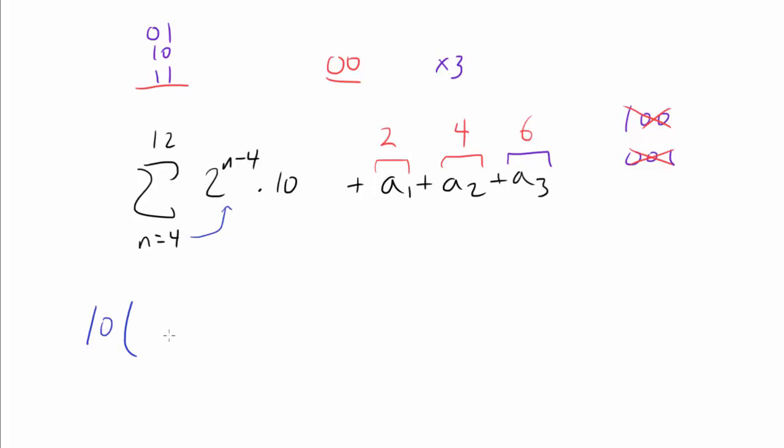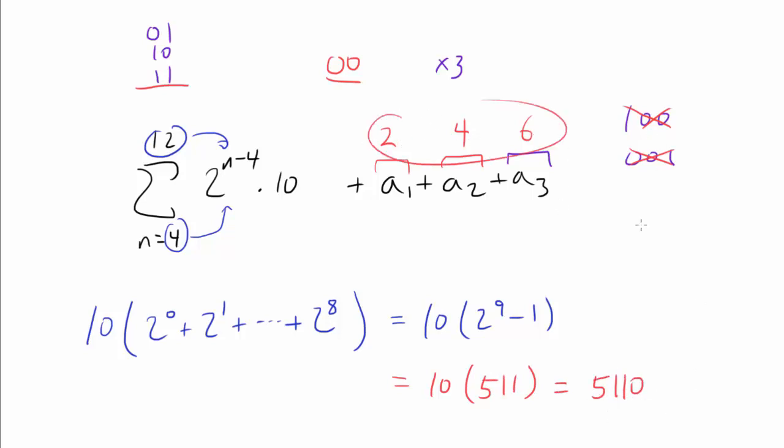How about the summation? We can factor 10 out, and inside, we are going to have 2^0, when n is 4, then 2^1, all the way to 2^8, when n is 12. This is 2^9 minus 1. That's a famous formula. And 2^9 is 512, so the final answer is 5110, plus 2 plus 4 plus 6, which is 12. So our final answer is 5122.